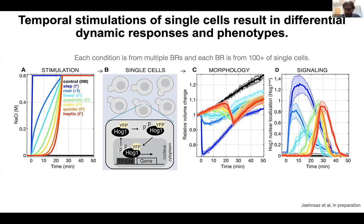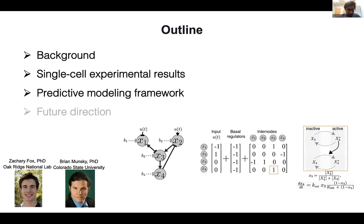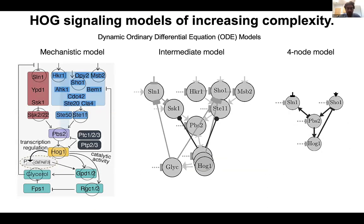We are interested in using these rich data sets to parameterize models and make predictions about signaling activation. In the modeling part, I collaborated with Brian Monsky and Zach Fox. We implement ordinary differential equation (ODE) models where the proteins and signaling pathways regulate each other and ultimately activate HOG-1, considering different feedbacks to the upstream from HOG-1. We consider models with different complexities, fit them to data, and make predictions.